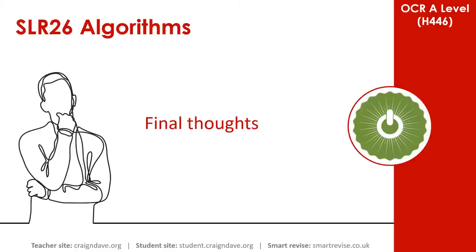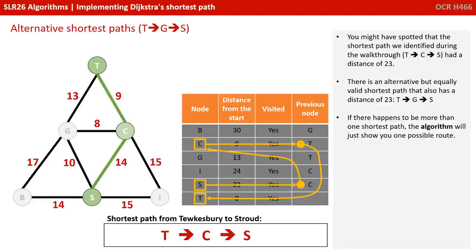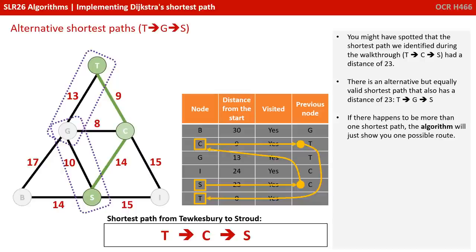You might have spotted that the shortest path T to C to S has a distance of 23. There's an alternative but equally valid shortest path that also has a distance of 23: T to G to S. If there happens to be more than one shortest path, the algorithm will just show you one possible route.